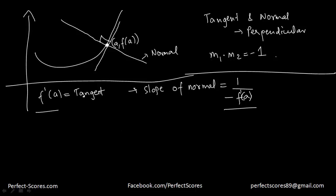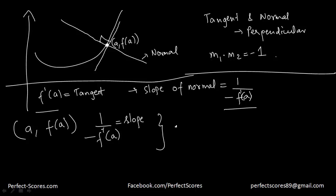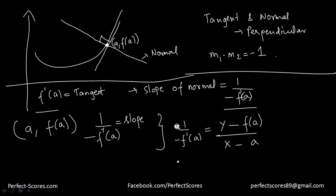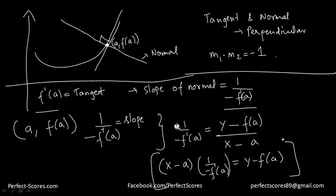So that is the slope of the normal: 1 over negative f'(a), because this times f'(a) should give negative 1. Again applying the formula — the normal passes through (a, f(a)) with slope negative 1 over f'(a) — the equation of the normal is: (x minus a) times (1 over negative f'(a)) equals y minus f(a). So this is the equation of the normal at a given point.